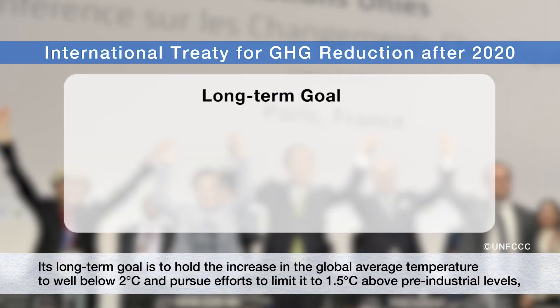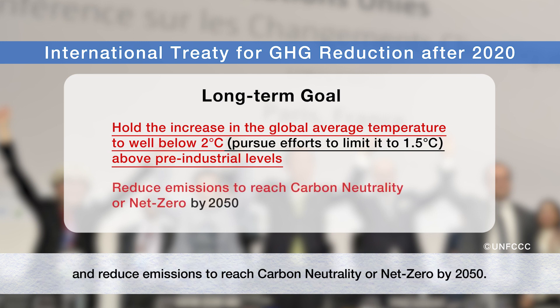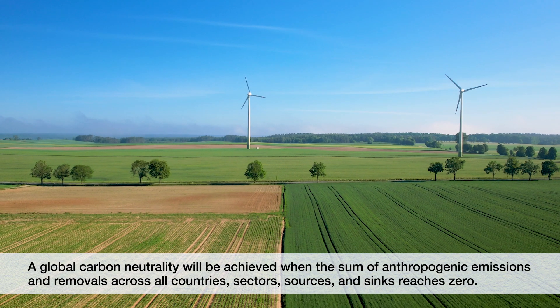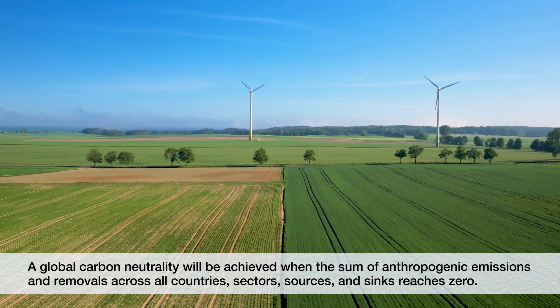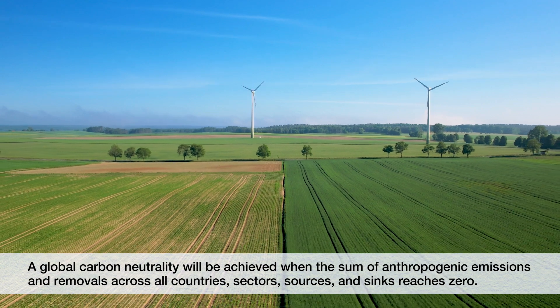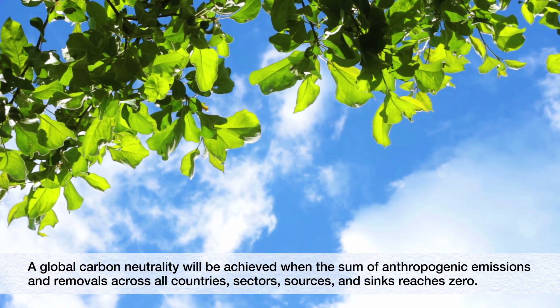Its long-term goal is to hold the increase in the global average temperature to well below 2 degrees, and pursue efforts to limit it to 1.5 degrees above pre-industrial levels, and reduce emissions to reach carbon neutrality or net zero by 2050. A global carbon neutrality will be achieved when the sum of anthropogenic emissions and removals across all countries, sectors, sources, and sinks reaches zero.